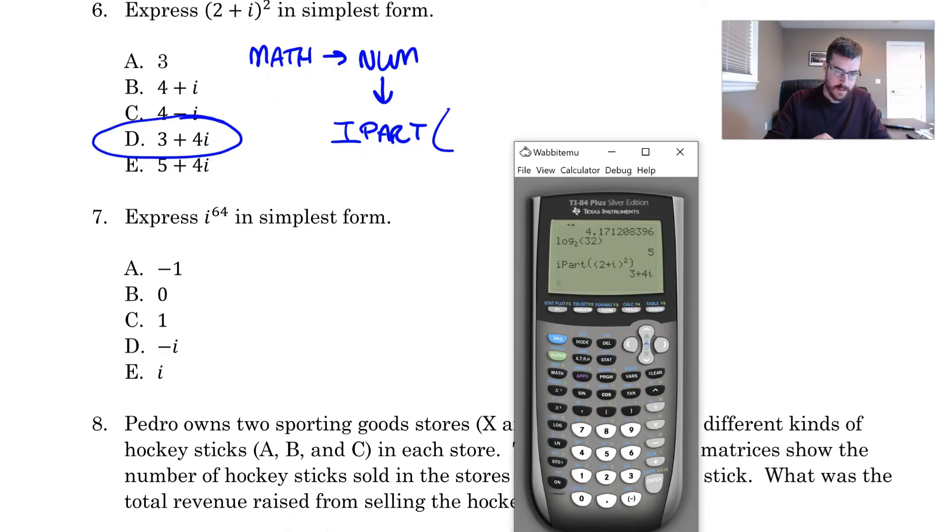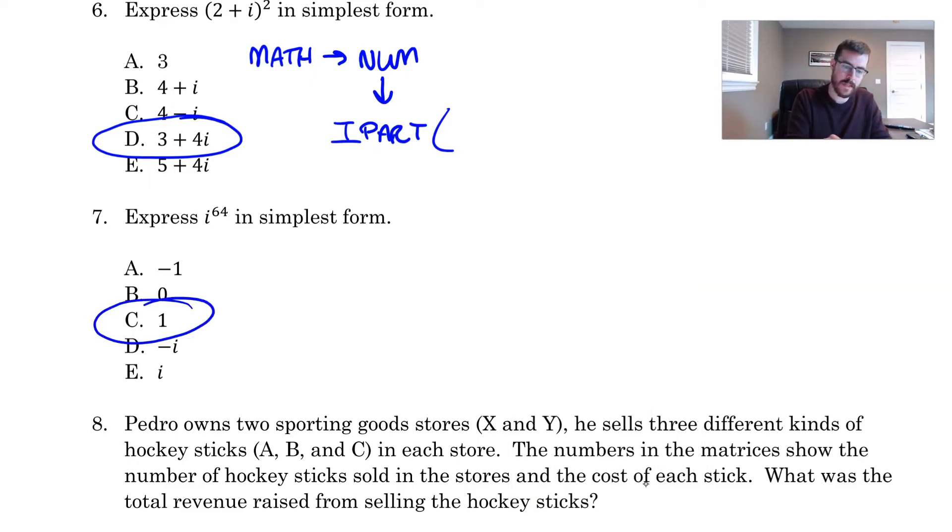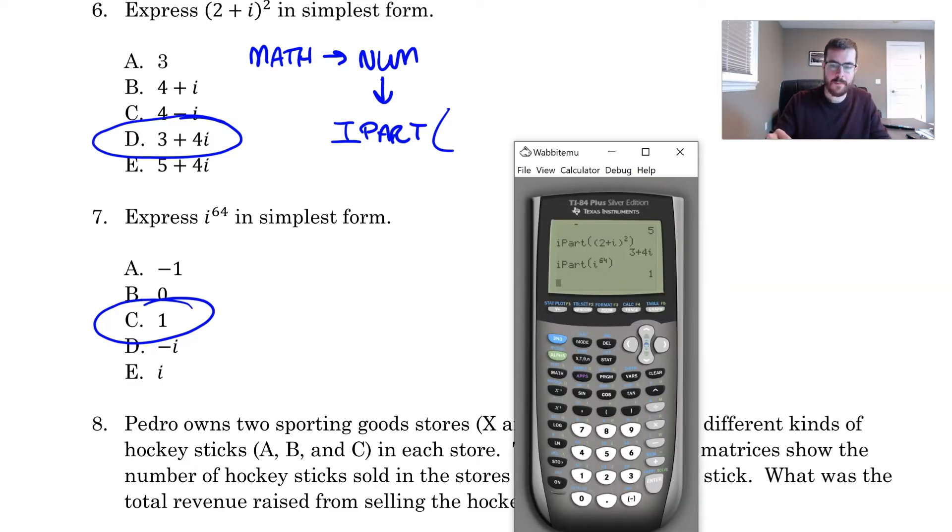Then I'm going to close that parentheses, square it, and then close my parentheses. And if I click enter on that, it tells me it's three plus four I. So I know right off the bat this is going to be choice D. And you could do the same thing for something like number seven where it says I to the 64. If I just go to math, num, and then I go down to I part, I hit second decimal, I could just type in I to the 64 here, and it will give me the answer is one. So I know it's choice C. You got to make sure you do it in I part though.